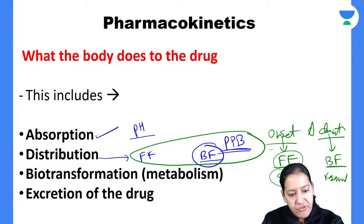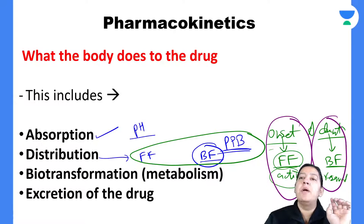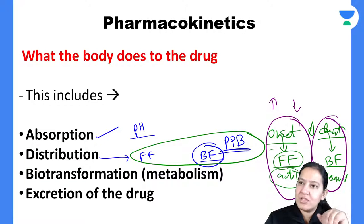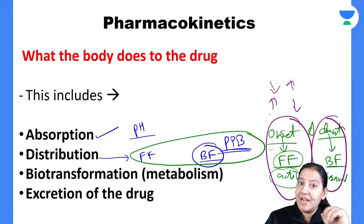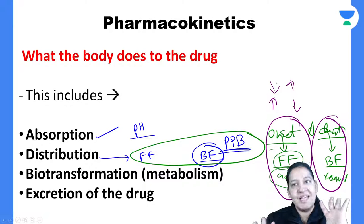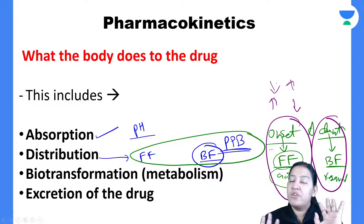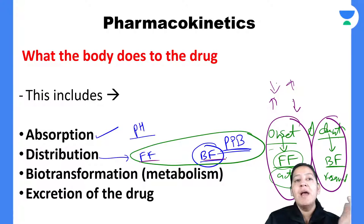Onset of drug depends on free form and duration of action depends on bound form. Drugs which have more free and less bound will have fast onset but less duration. Drugs which have less free but more bound will have slow onset but more duration of action. So there are two types of drugs depending on the proportion of free and bound form.